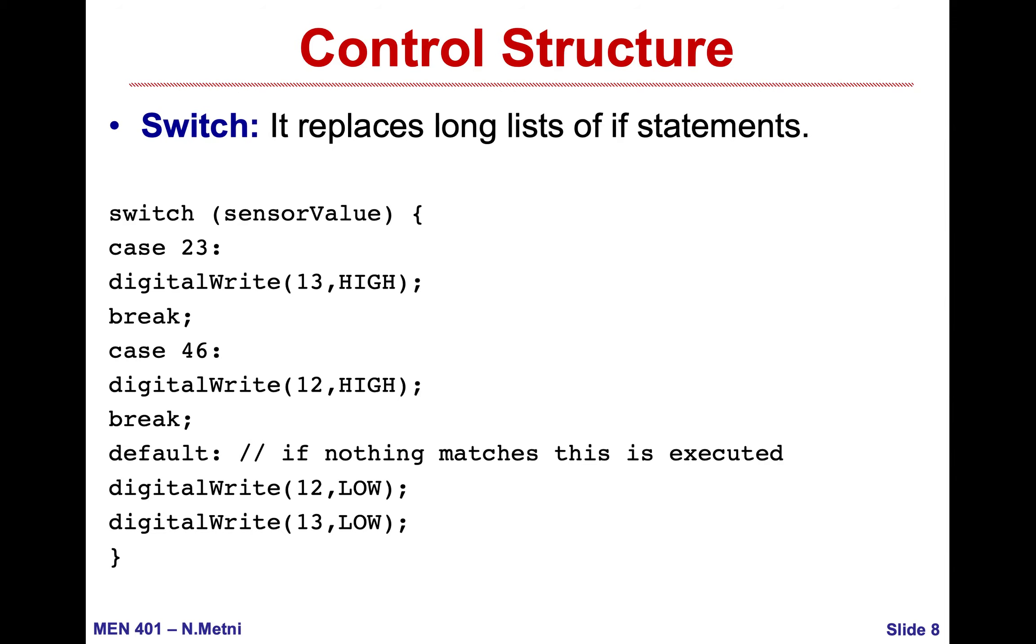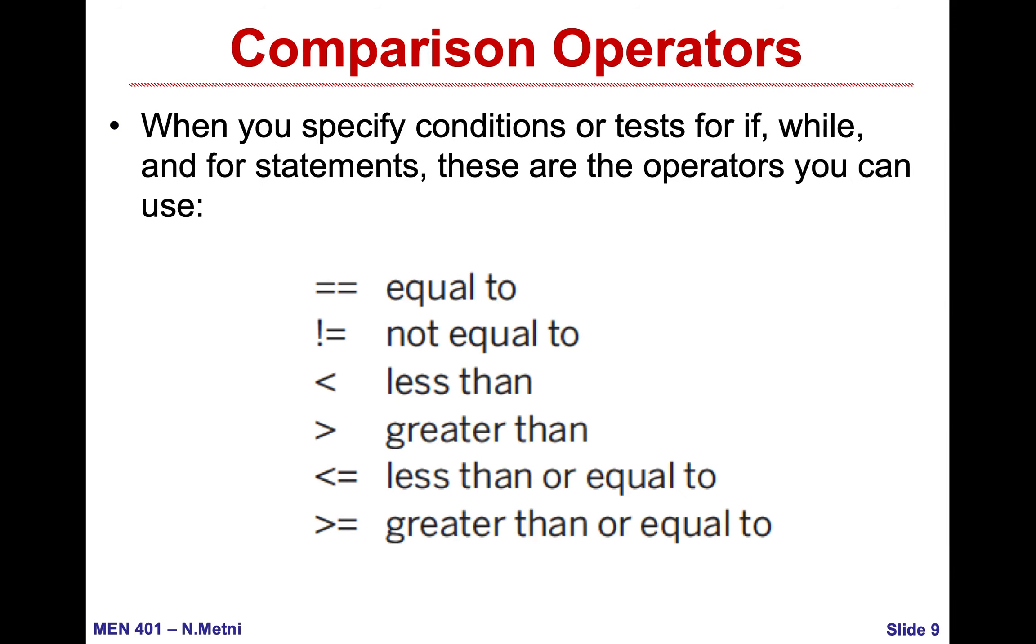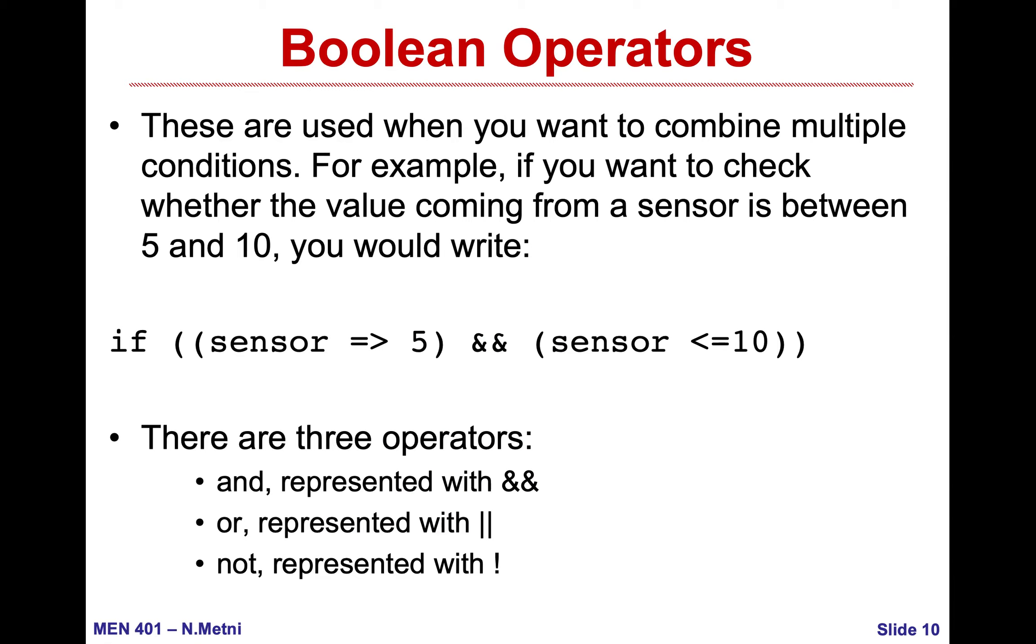In the if condition when I have a certain comparison, here I will show you all the operators that can be used as comparison operators. If I want to say a variable is equal, I put double equal. If a variable is not equal, I put exclamation mark equal. Then less than, greater than, less or equal, greater or equal.